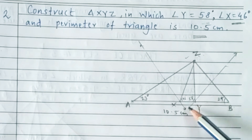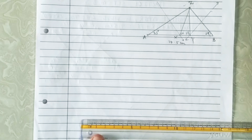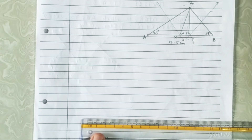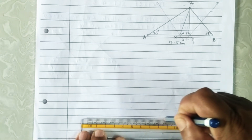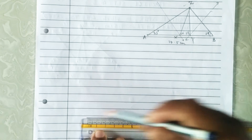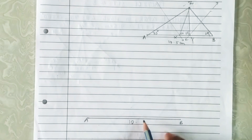Join XZ and YZ — this will be our triangle XYZ. Let us proceed with the fair figure. First draw the base segment of length 10.5 centimetres: AB equals 10.5 centimetres.